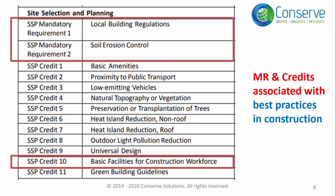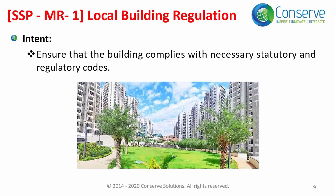Let us start with the first group of mandatory requirements and credits associated with best practices in construction. Mandatory requirement 1 is Local Building Regulations. As the name implies, this mandatory requirement is associated with compliance of local building regulations. The intent or objective is to ensure that the building complies with necessary regulatory codes and standards.